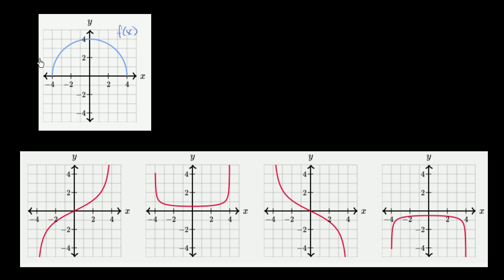We can see when x is equal to negative 4, the slope of the tangent line is essentially vertical — not really defined there. But as we go slightly to the right of x equals negative 4, we have a very, very positive slope. So the slope is going from near infinity, getting less and less positive as we move toward x equals 0. Which of these graphs should have a value approaching infinity when x is equal to negative 4, and then getting less and less positive as x goes to 0?